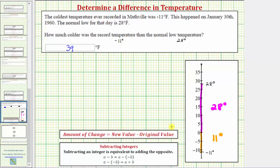So negative 11 minus 28 is equal to negative 39. Notice how the difference is negative.